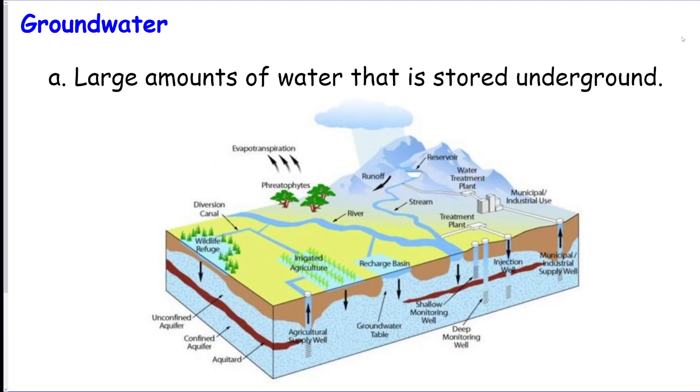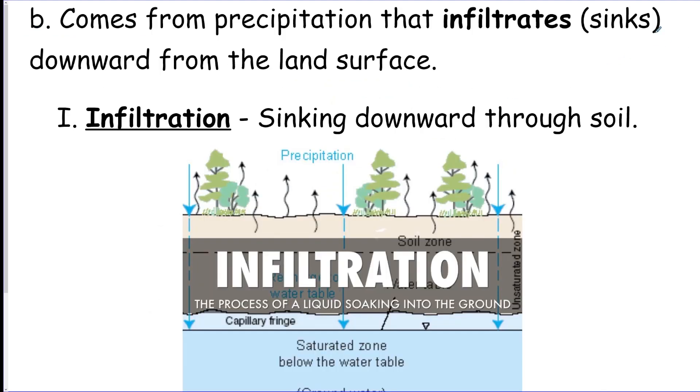Once that rainwater hits the ground, it actually seeps through the ground as you can see here. The ground is like a sponge and soaks it up, and it starts pooling underground. We call this groundwater. The process of the water soaking through the ground is called infiltration - it infiltrates through the dirt like a sponge.